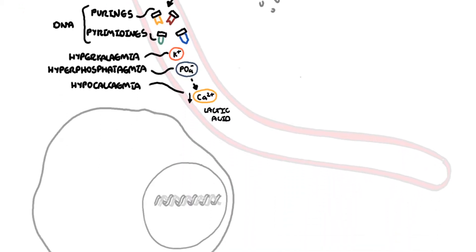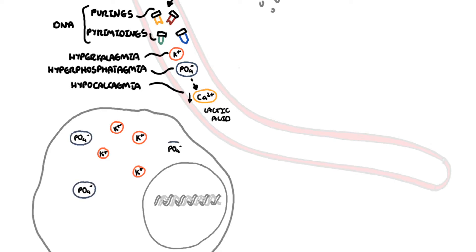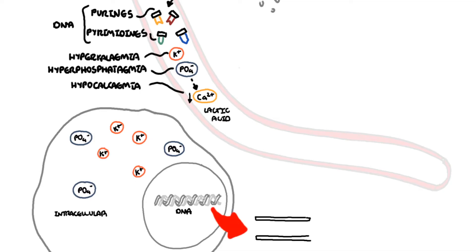Our body cells, including the tumor cells — the main cations intracellularly inside the cells are potassium, and the main anion, the negatively charged, are phosphate. The DNA within the nucleus of the cells are made up of the building blocks, purines and pyrimidines, which under normal regulatory control can get recycled or removed from the body safely.